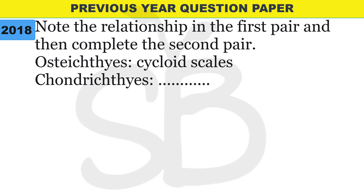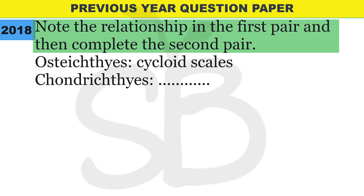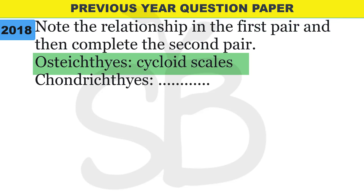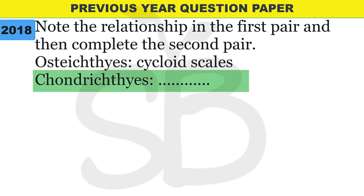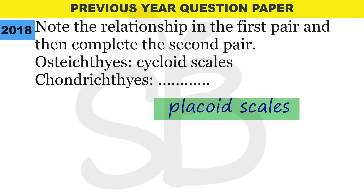Next question from 2018: note the relationship in the first pair and complete the second pair. Osteichthyes : Cycloid scales, therefore Chondrichthyes : Placoid scales.